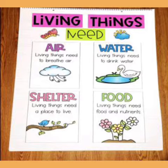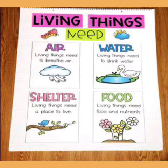What does a living thing need to live? Living things need air to breathe, water to drink, shelter or a place to live, and food and nutrients to eat. So a living thing needs air, water, shelter and food.